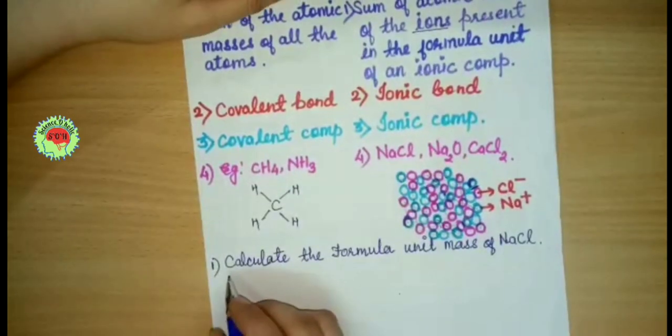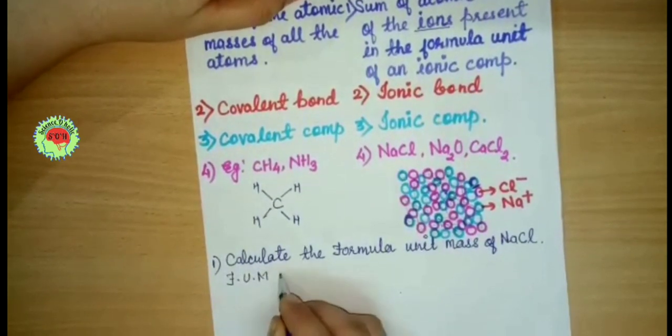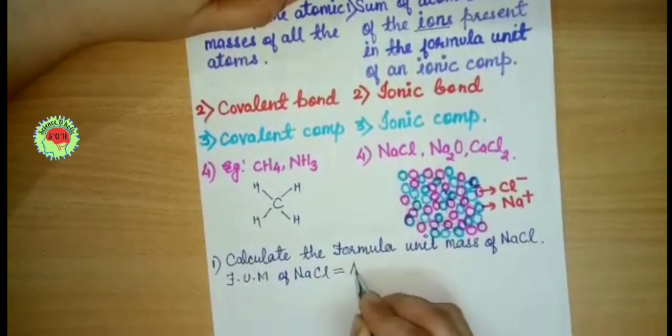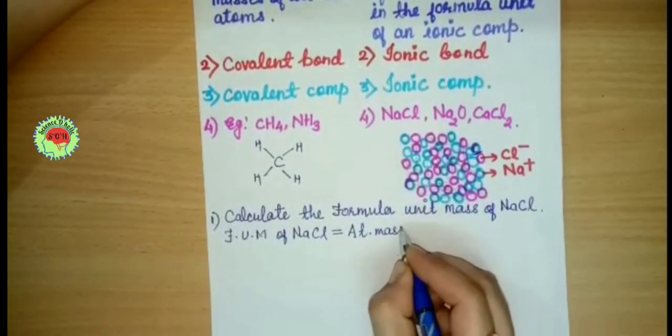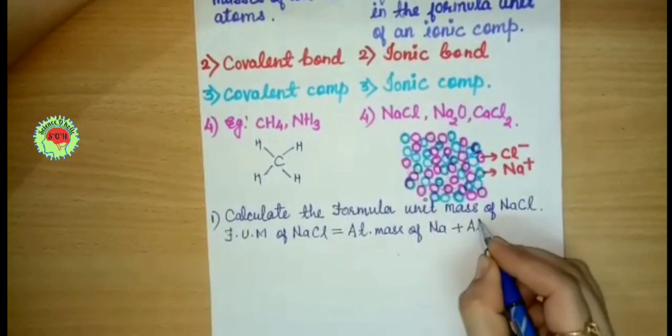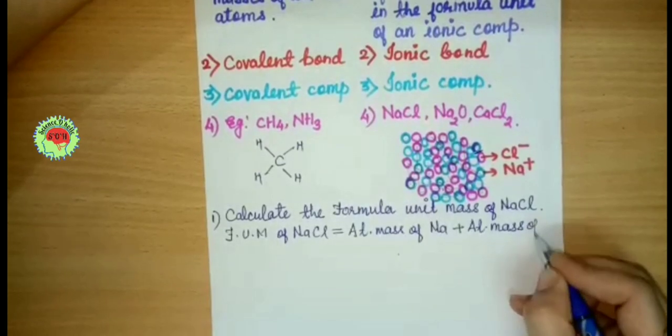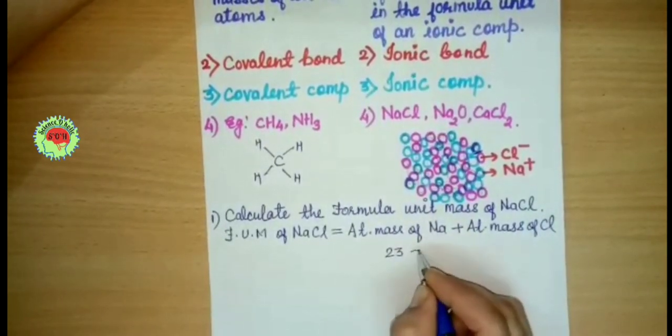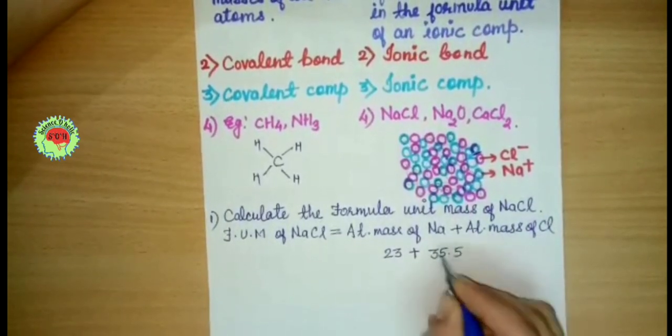Let's calculate the formula unit mass of NaCl. Formula unit mass of NaCl equals atomic mass of Na plus atomic mass of Cl. You know that atomic mass of Na is 23, atomic mass of Cl is 35.5.